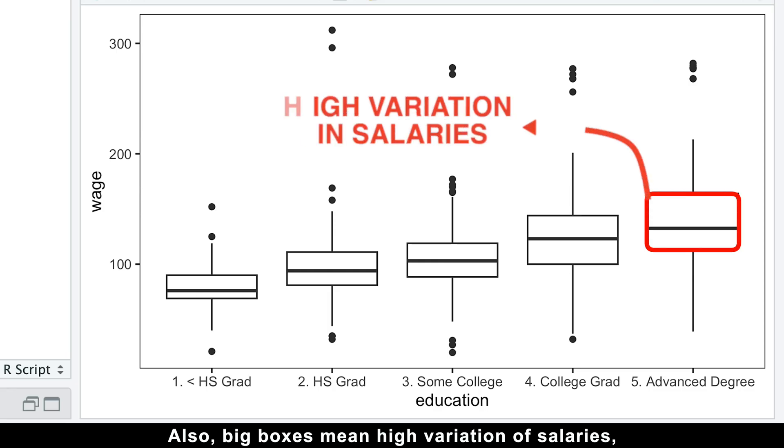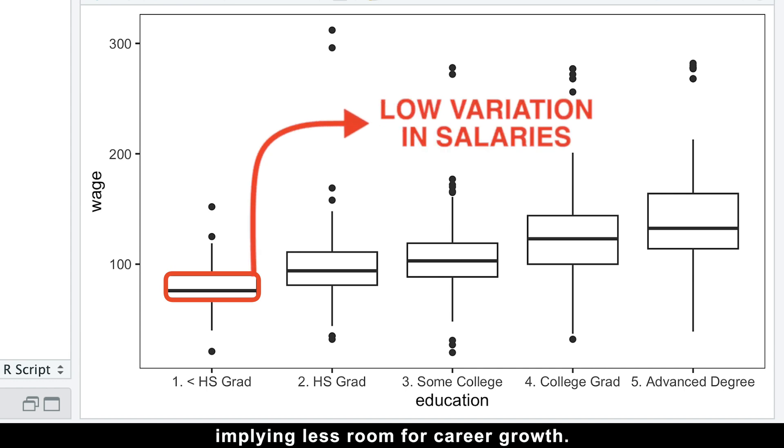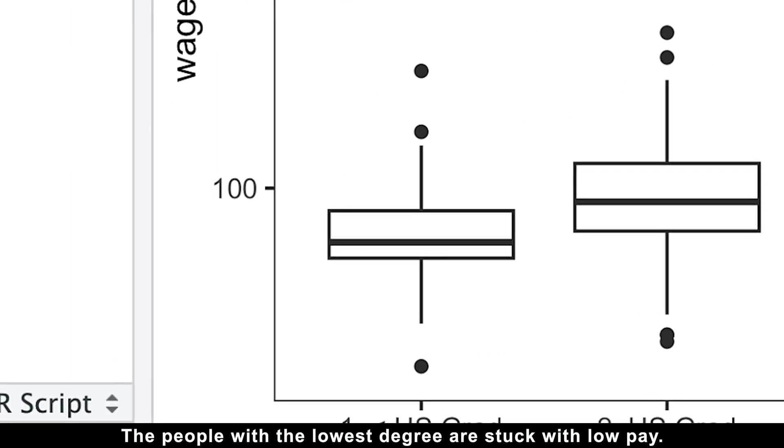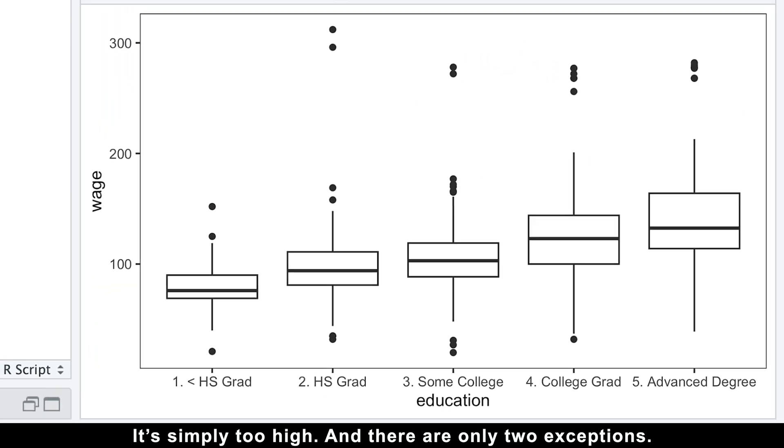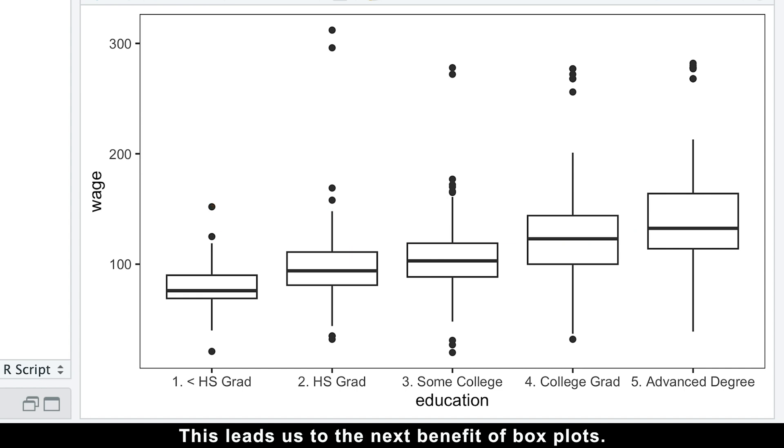Also, big boxes mean high variation in salaries, which offers more opportunities to earn money, while small boxes mean low variation of salaries, implying less room for career growth. The people with the lowest degree are stuck with low pay, and the median of the lowest education level is very close to the lowest hinge of the box. This means that the distribution is skewed towards lower salaries, so that the average salary in this group is misleading. It's simply too high. And there are only two exceptions. Two people who earn as much as college graduates. This leads us to the next benefit of box plots.